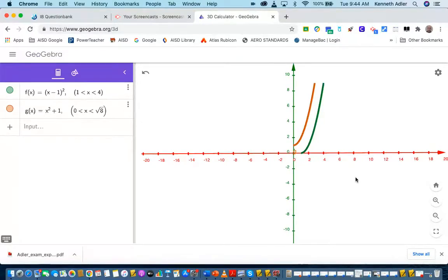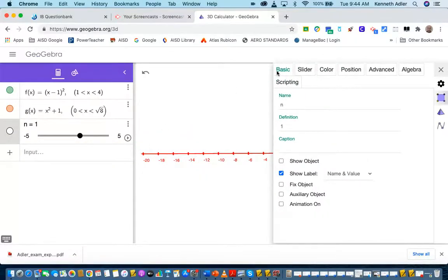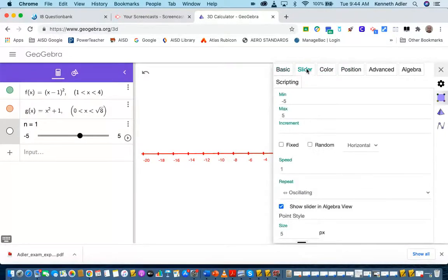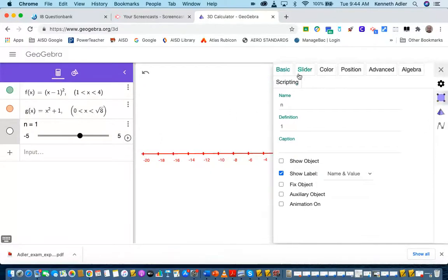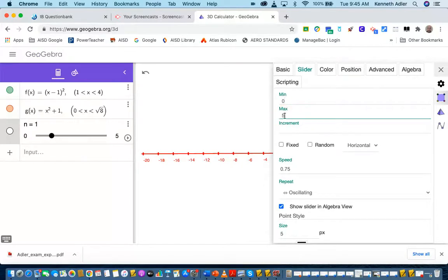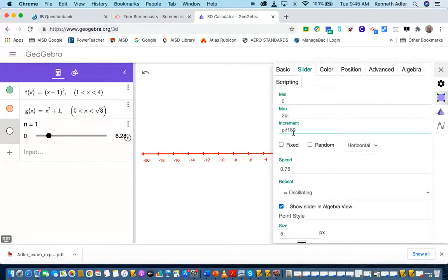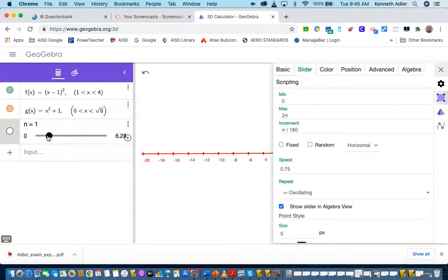Now the idea is we want to take all that piece inside and we want to rotate it around the y-axis. The first thing we need to do is, if we're going to talk about rotations, we need a slider that goes from 0 to 360. Type the letter N, then click on the three dots. Settings. You're going to need basic slider color position. Go to slider. The slider, we're going to start at 0, go to 2π. The increment is going to be π divided by 180. Now you can enter.